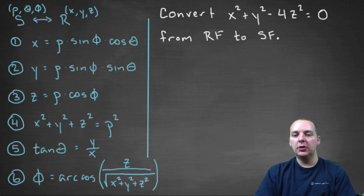So you should know the drill by now, we've done a number of examples. What we're going to do is we're going to look at all the conversions that we've derived in previous videos and find some way to get the x, y's, and z's out of there and replace them with ρ, θ, and φ instead.